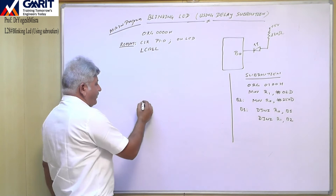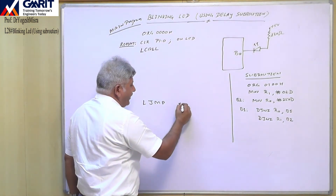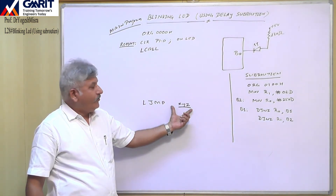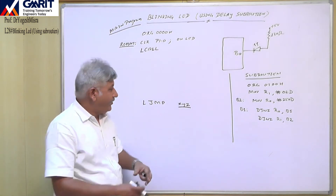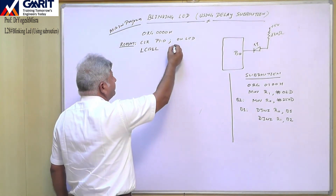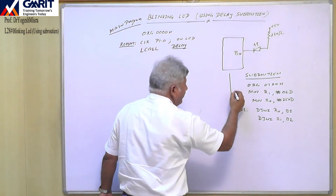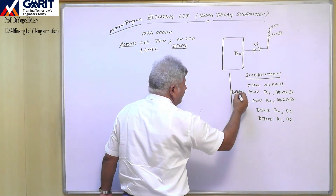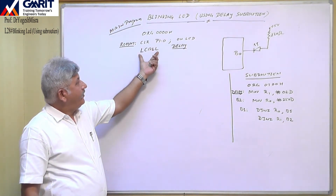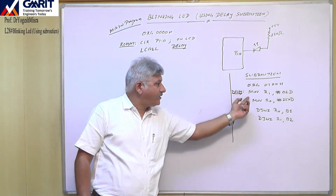So here I write LCALL delay, where 'delay' is the label at the start of our subroutine at 0100H. LCALL will transfer the sequence of our program to this label 'delay' and these subroutine instructions will be executed. You might think that LJMP could also be used since it also transfers program execution to the label, but there is an important difference.